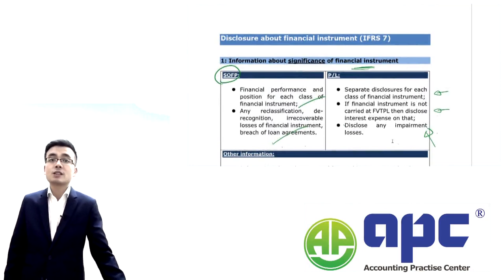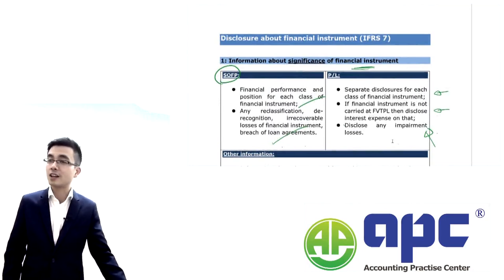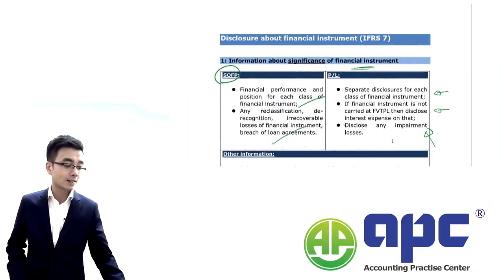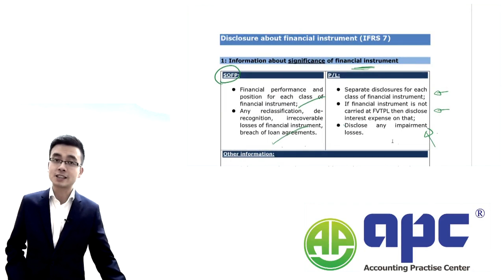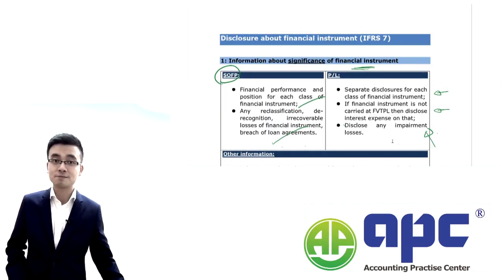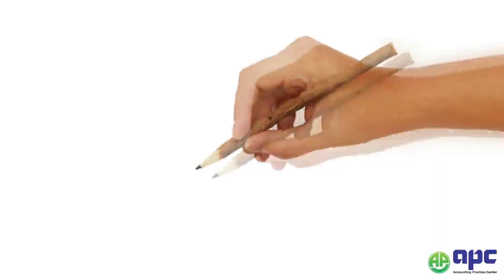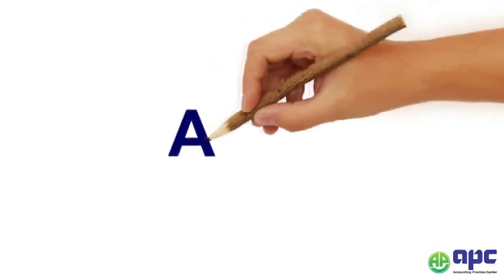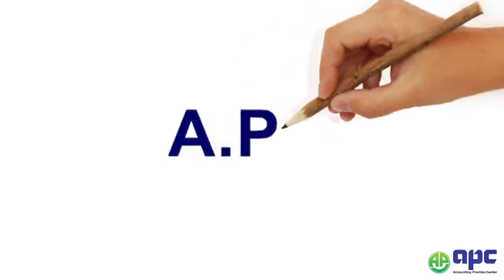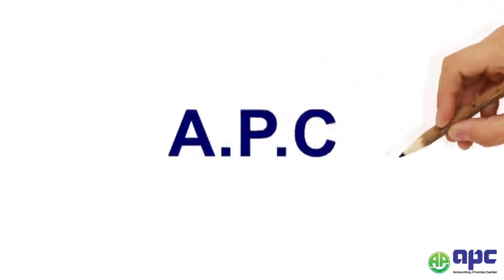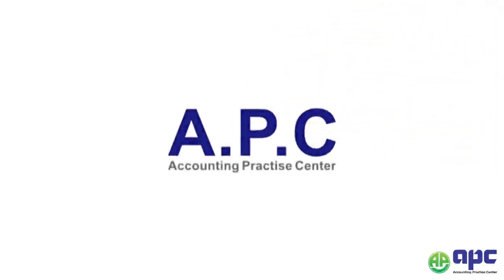All we need to understand is that we must disclose the significance and the risks of financial instruments. That's enough for this session. I hope you enjoyed it — I'll see you in the next session. APC — accounting for your future.